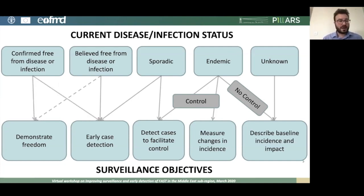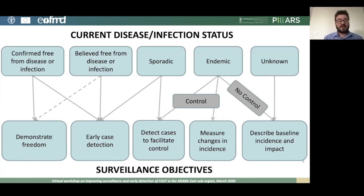If you are confirmed free from disease or infection — through various studies, existing surveillance, or OIE confirmed disease-free status — then what you want to do is maintain that status. You want to continually demonstrate freedom, but you also want measures in place so that you can detect cases early if they occur.